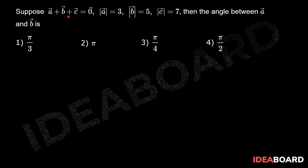Suppose a⃗ + b⃗ + c⃗ = 0⃗, mod a⃗ equal to 3, mod b⃗ equal to 5, mod c⃗ equal to 7. Then find the angle between a⃗ and b⃗.